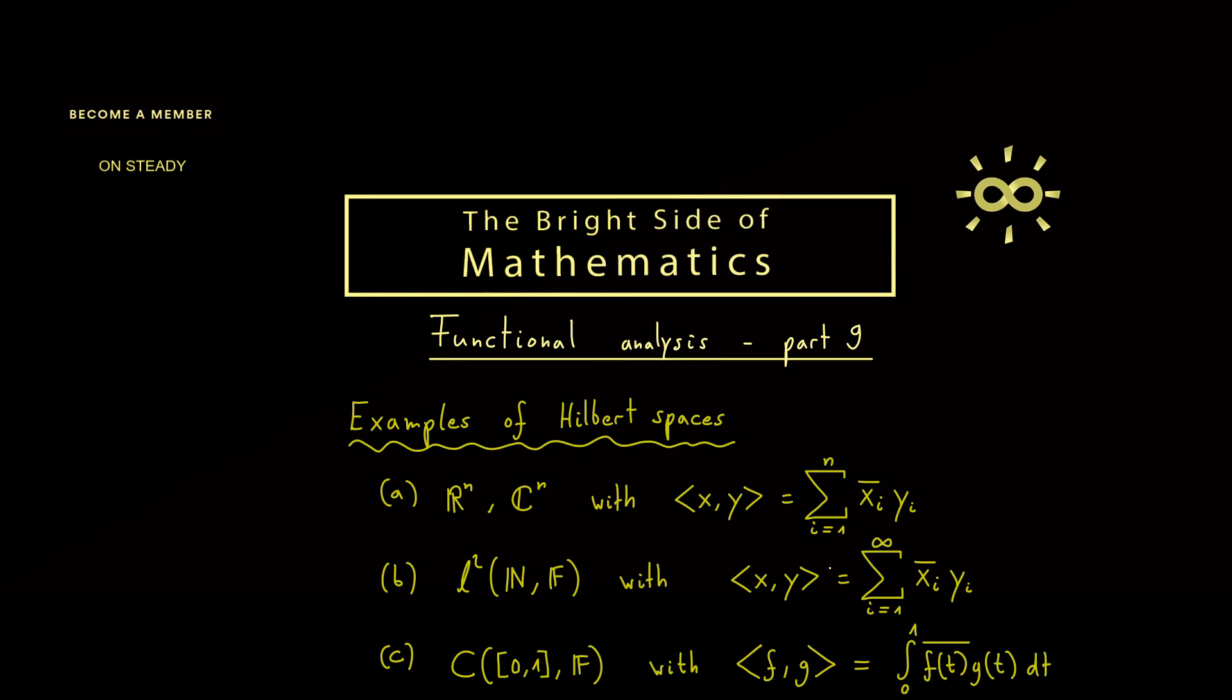Ok, I would say these three are one of the most important examples at the beginning of such a course. The first one gets us the normal, the Euclidean geometry in R^n or C^n. Part b then generalizes that to an infinite dimension. And part c gives us a geometry for continuous functions.